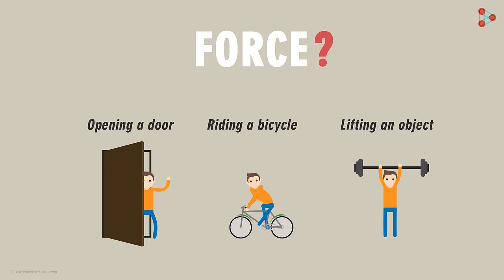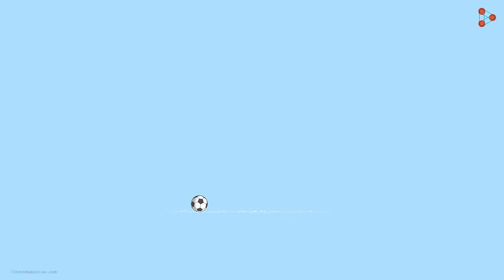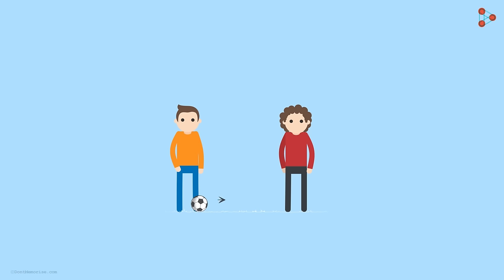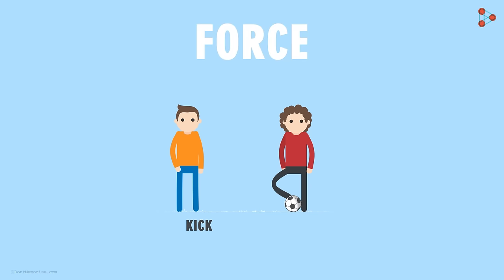What is a force? Consider a ball lying on the ground at rest — it's not moving. Suppose this player wants to pass the ball to his teammate standing on the other side of the pitch. He needs to make this ball move in the direction of his teammate, so he will kick the ball. When he kicks the ball, we say that he applied a force on the football. The kick is nothing but the force he applied on the ball.